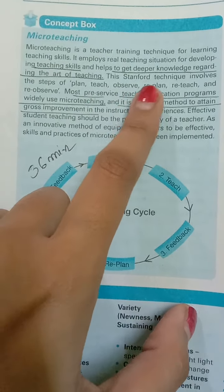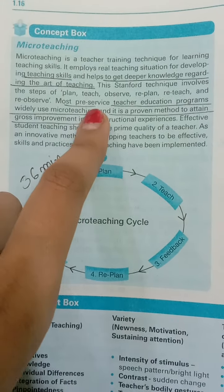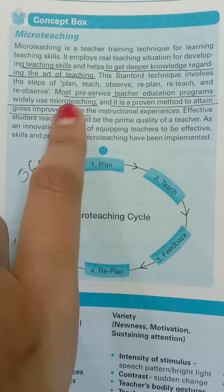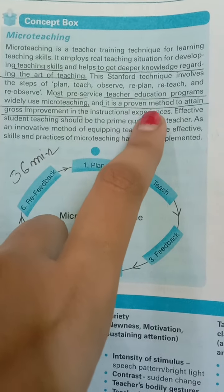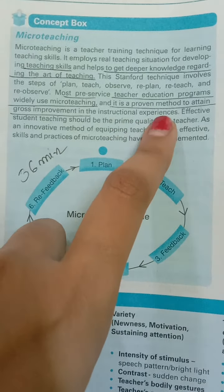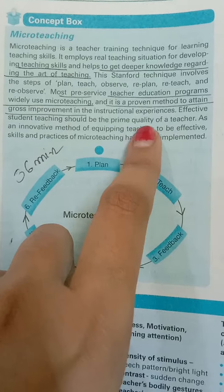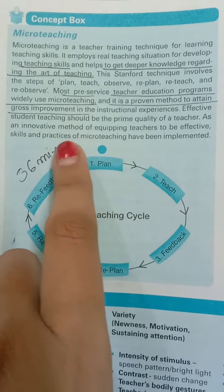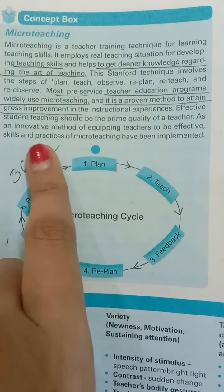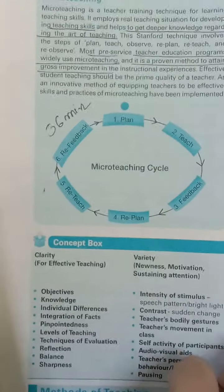The cycle is: Plan, Teach, Observe, Re-plan, Re-teach, and Re-observe. Most pre-service teacher education programs widely use micro-teaching, and it is a proven method to attain gross improvement in instructional experiences. Effective student teaching should be the prime quality of a teacher. As an innovative method of equipping teachers to be effective, skills and practices of micro-teaching have been implemented.